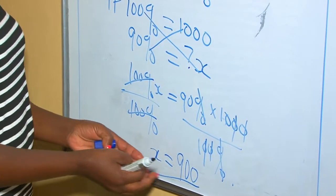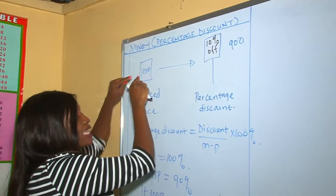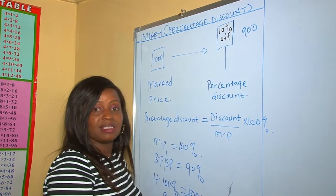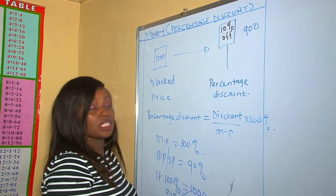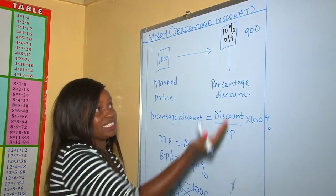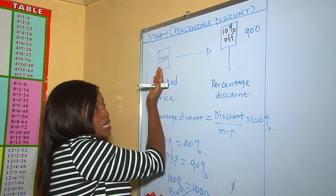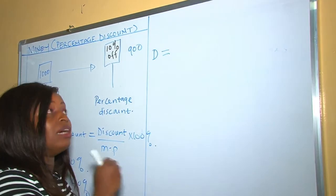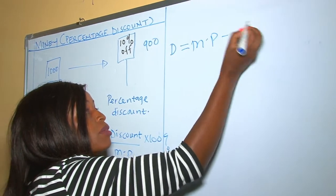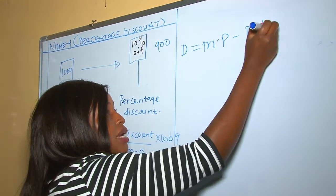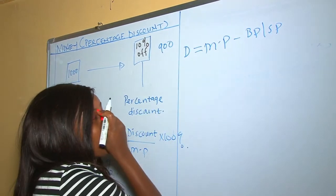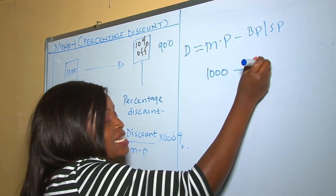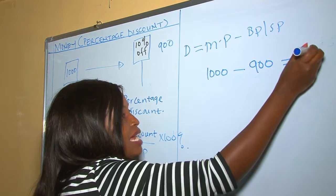Therefore the buying price will be 900 shillings. Instead of paying 1000, you now pay 900 because a discount has been given. They can also ask what the discount was. Applying the formula: discount = marked price − buying price = 1000 − 900 = 100 shillings. So our discount was 100 shillings.